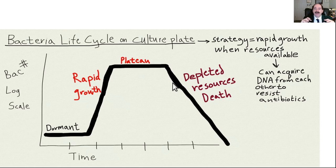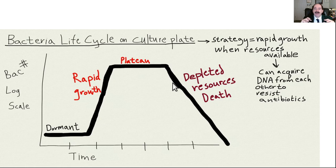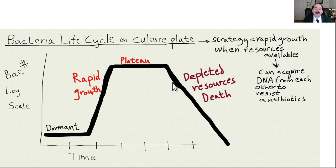Once a cell loses its mitochondria and becomes a cancer cell, it starts to behave like anaerobic bacteria. A normal cell in our bodies has a job — a liver cell, for example, maintains blood glucose during fasting, detoxifies chemicals in the blood, excretes estrogen, produces bile for digestion of lipids, and stores glycogen. But once it lacks mitochondria, it becomes like anaerobic bacteria.